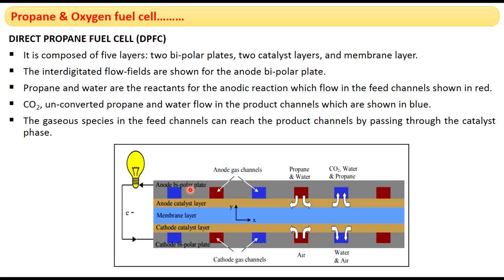The two bipolar plates contain feed channels of two types: red-colored channels are inlets and blue-colored channels are outlets. At the anode, propane and water are fed through the red inlet channel, and products — CO₂, unreactive water, and unreactive propane — are removed through the blue outlet channels.